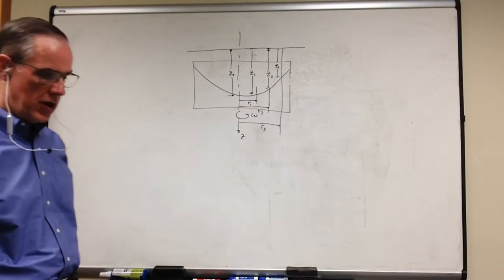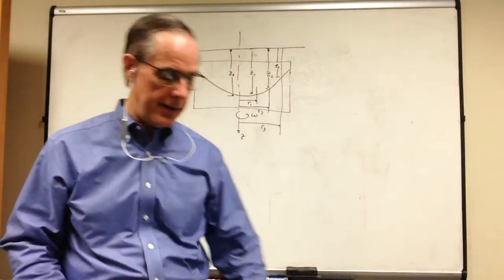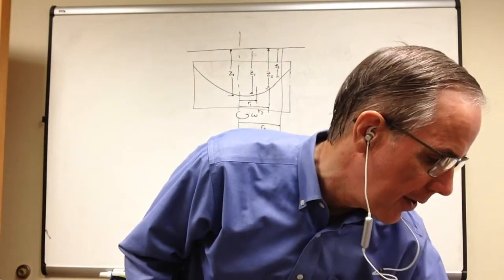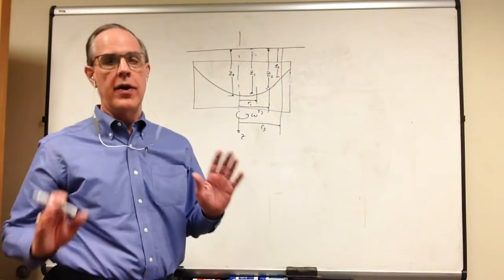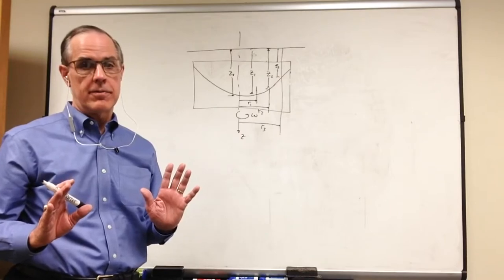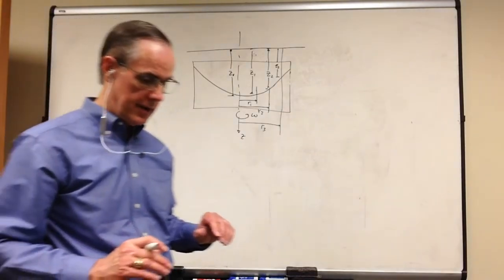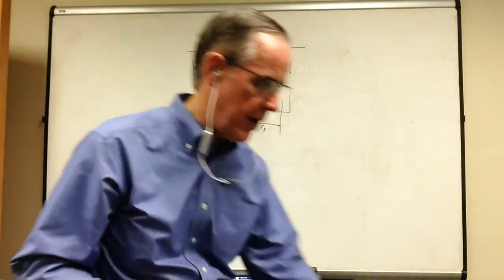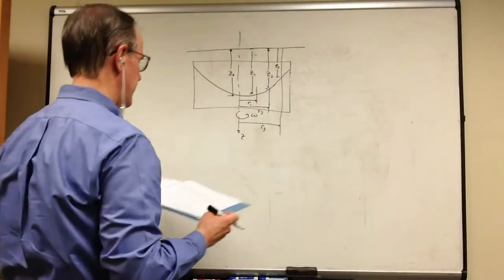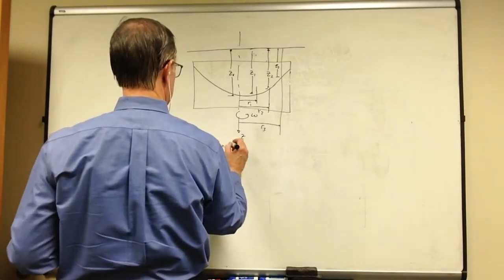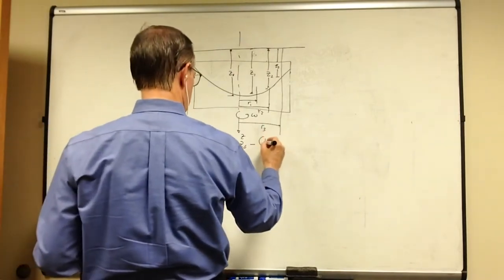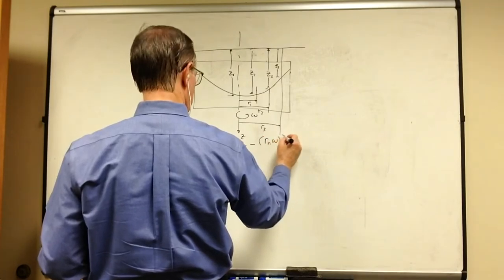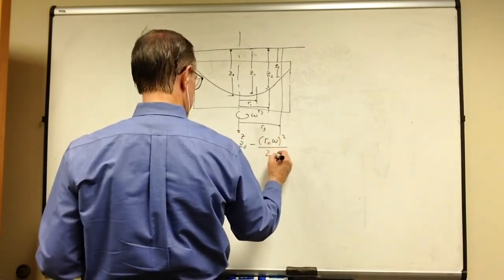If I know the omega, and by the way, I have had students who have gone through this experiment and realized at the end they forgot to measure omega. But anyway, omega is a constant. The location of each of these points, zn, is equal to z-naught minus Rn omega squared over 2g.